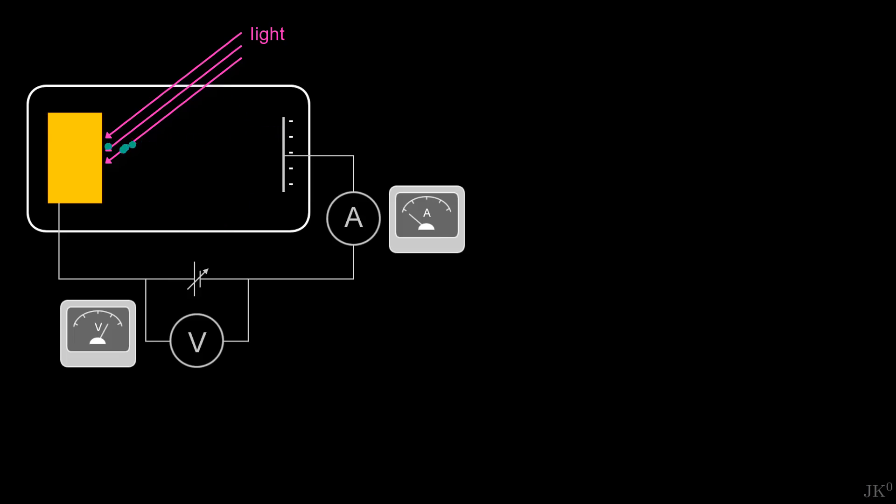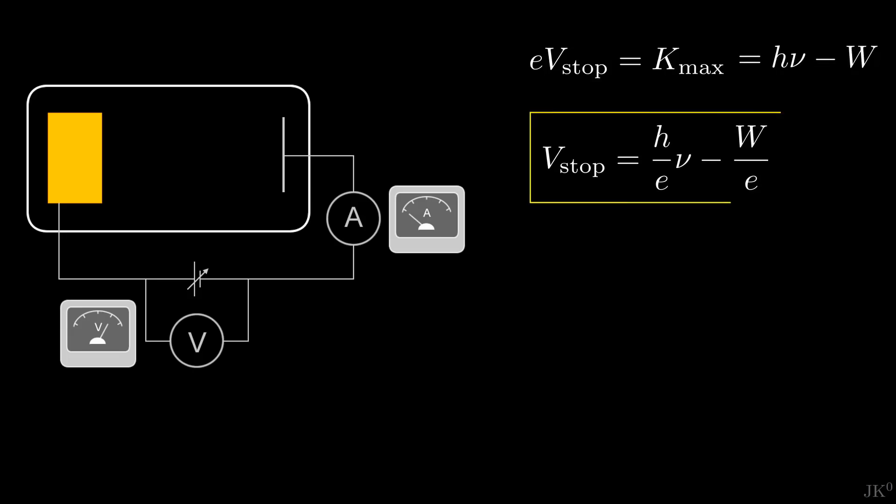By increasing the voltage, the current decreases even more. At some point, even the most energetic photoelectrons will be deflected away from the collector, and the current will drop to zero. This is called the stopping voltage, and it tells us the maximum kinetic energy of the photoelectrons in the form e times V equals K max. Here we can set K max to be Einstein's formula, from where we get the expression used by Millikan.